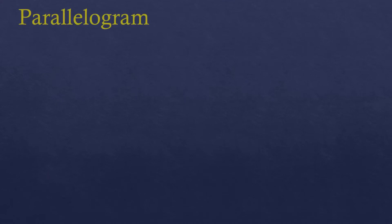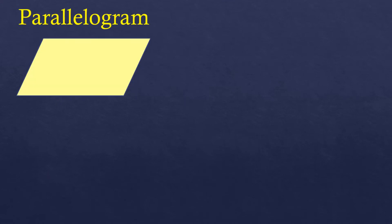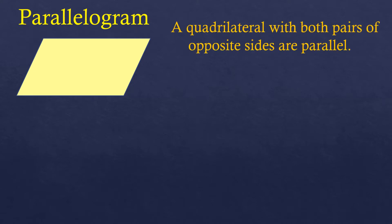Let's talk about the parallelogram. A parallelogram is a quadrilateral with both pairs of opposite sides parallel — the top and bottom are parallel, and so are the left and right sides. They do not intersect each other if you extend them.